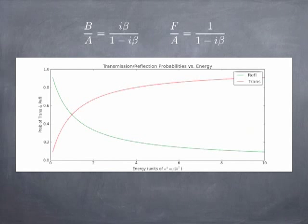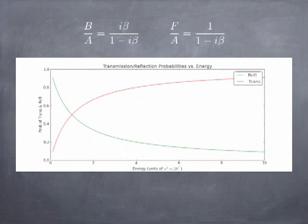If you calculate the probability of transmission and reflection as a function of energy, measuring energy in units of alpha squared m over 2 h-bar squared — the natural units for this problem — you get what may be an obvious result: the higher the energy, the lower the probability of reflection and the higher the probability of transmission. This is consistent with real scattering experiments: at high enough energy, the particle won't get reflected, it'll just pass right through.